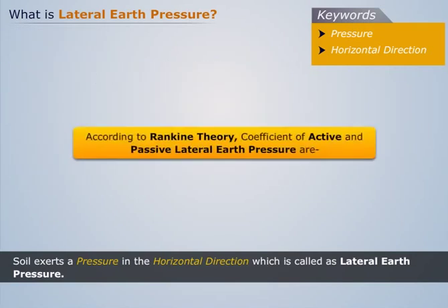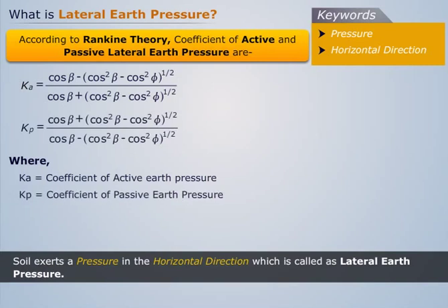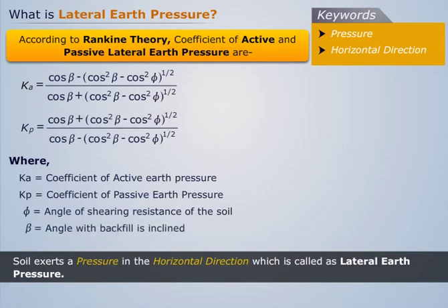According to Rankine theory, the coefficients of active and passive lateral earth pressure are defined as follows: Ka is the coefficient of active earth pressure, Kp is the coefficient of passive earth pressure, phi is the angle of shearing resistance of the soil, and beta is the angle with which the backfill is inclined.